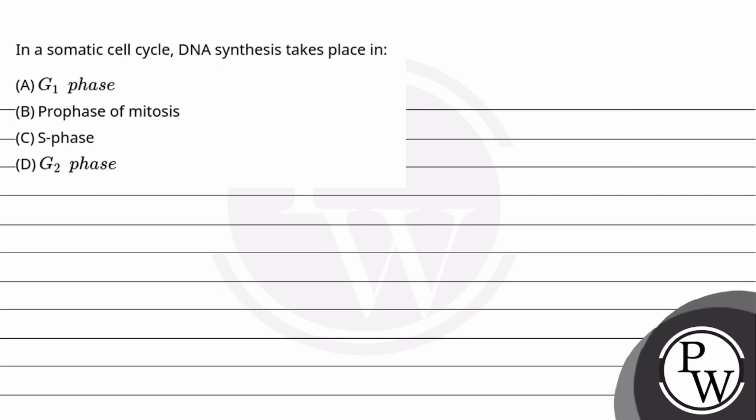Hello, let's read the given question. In a somatic cell cycle, DNA synthesis takes place in: A) G1 phase, B) Prophase of mitosis, C) S phase, D) G2 phase. So we have been asked when DNA synthesis occurs in the somatic cell cycle.